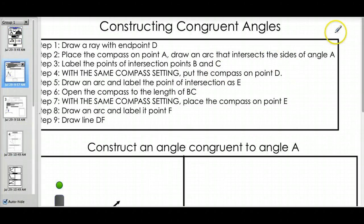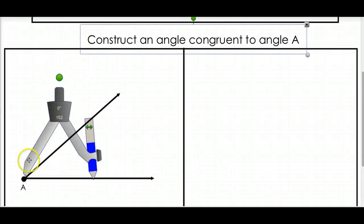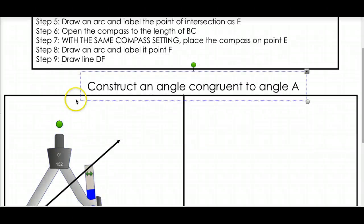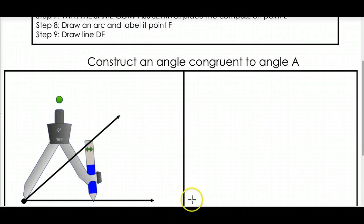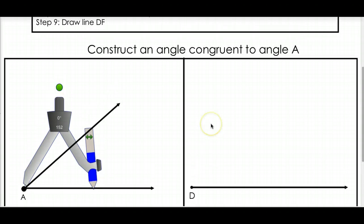Two, constructing congruent angles. There's a few more steps, so follow along closely with me, students. So, this is our angle. This is angle A. We want to draw a congruent angle that's congruent to angle A. Now, the first thing we're going to do is, once again, draw a ray. So, let's draw a ray, like so. Once again, make it a long one. And we'll have the endpoint called D. Does it matter what we call it? No, we're just going to call it D for now.